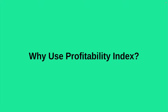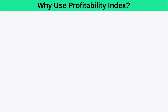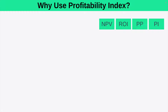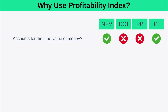Let's take a look at why you might want to use the Profitability Index rather than some of the other capital budgeting tools. We're going to see how each tool compares across the various things you might want to evaluate when considering the attractiveness of an investment. We have net present value, return on investment, payback period, and profitability index. If we want to account for the time value of money, then net present value and profitability index will do that, but the other tools won't. Similarly, if we want to account for cash flows over time, net present value and profitability index will do that, but the other tools won't.